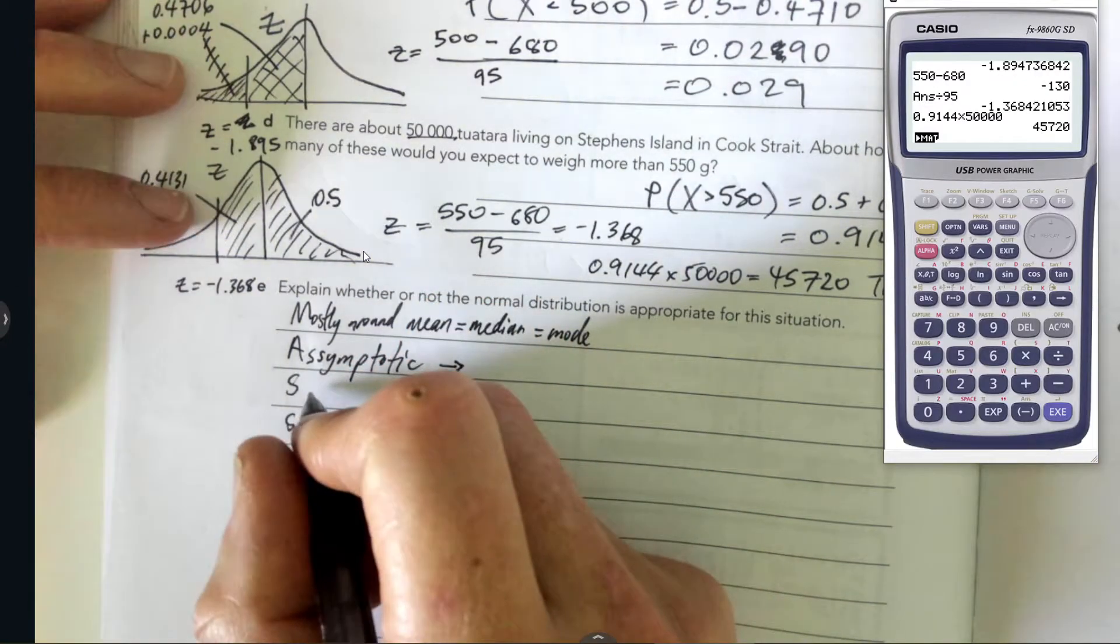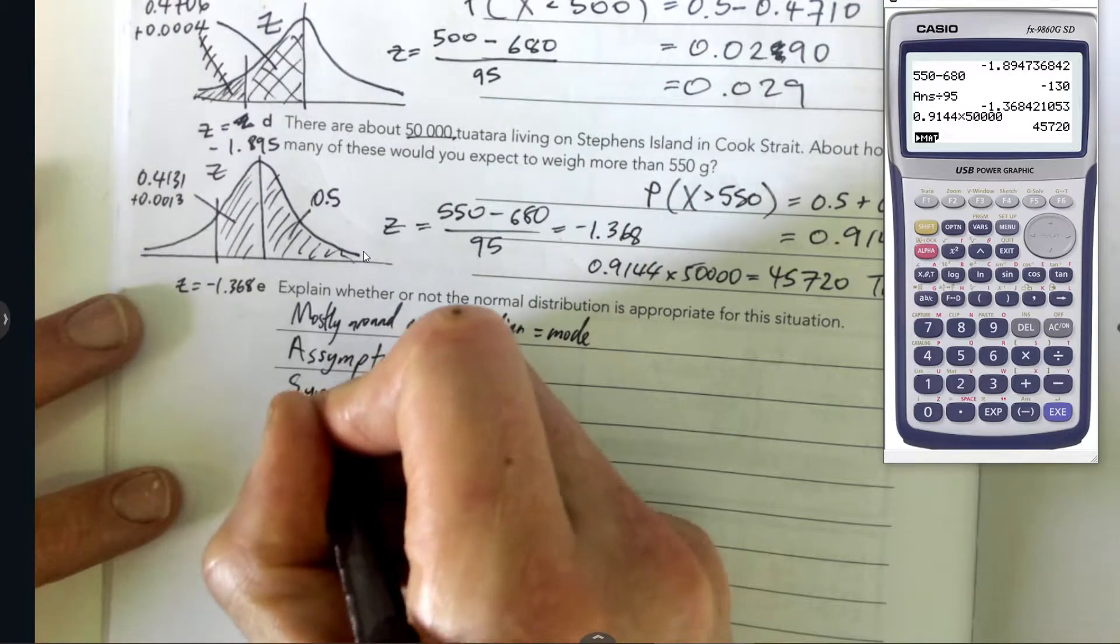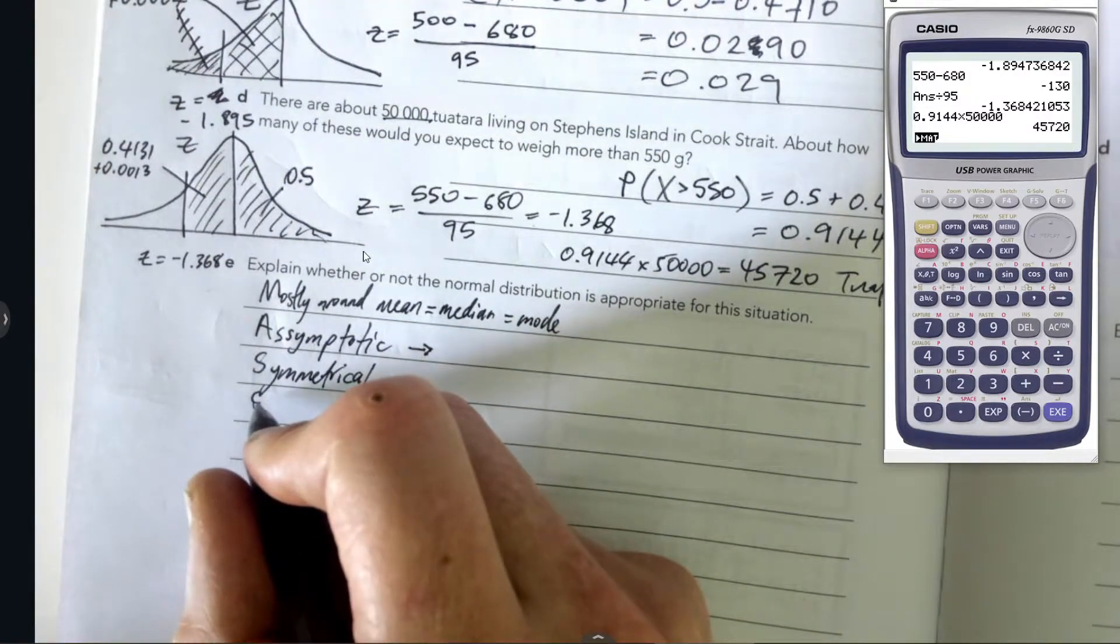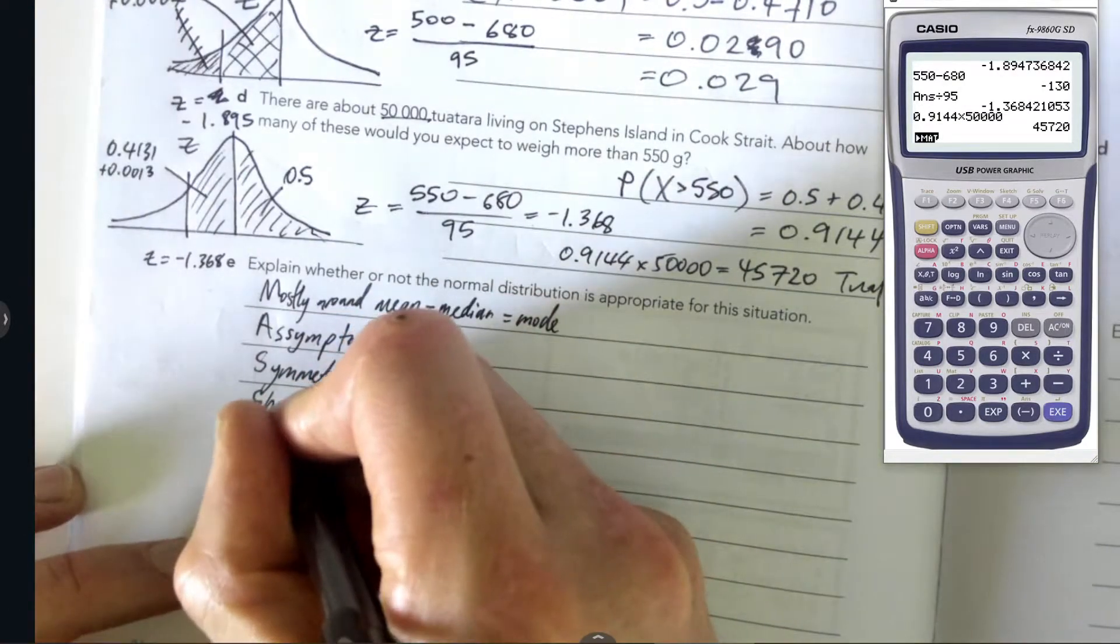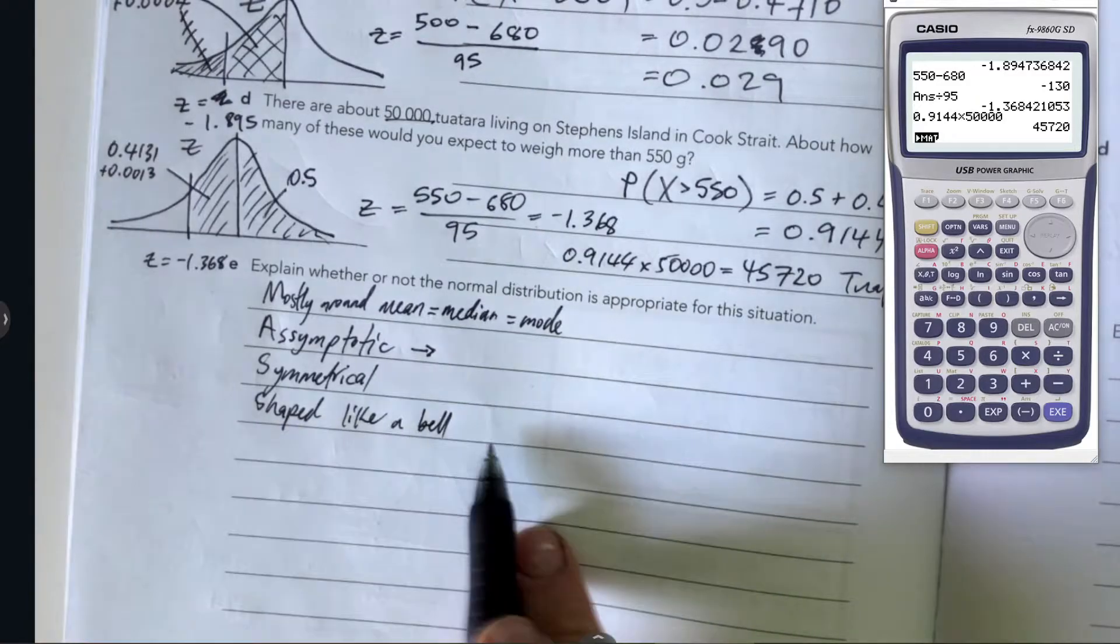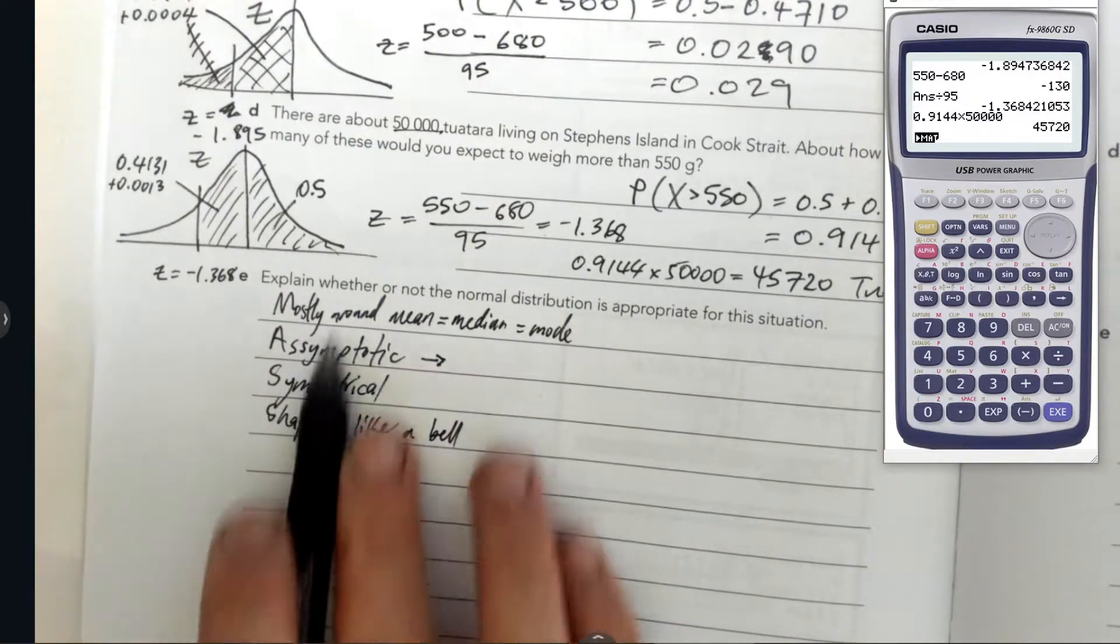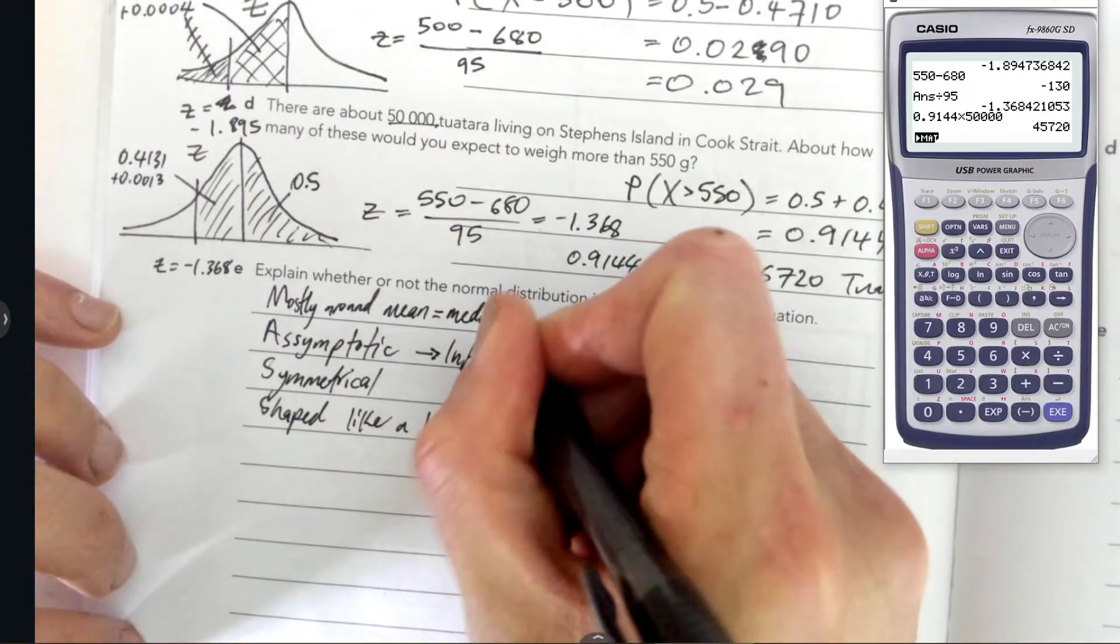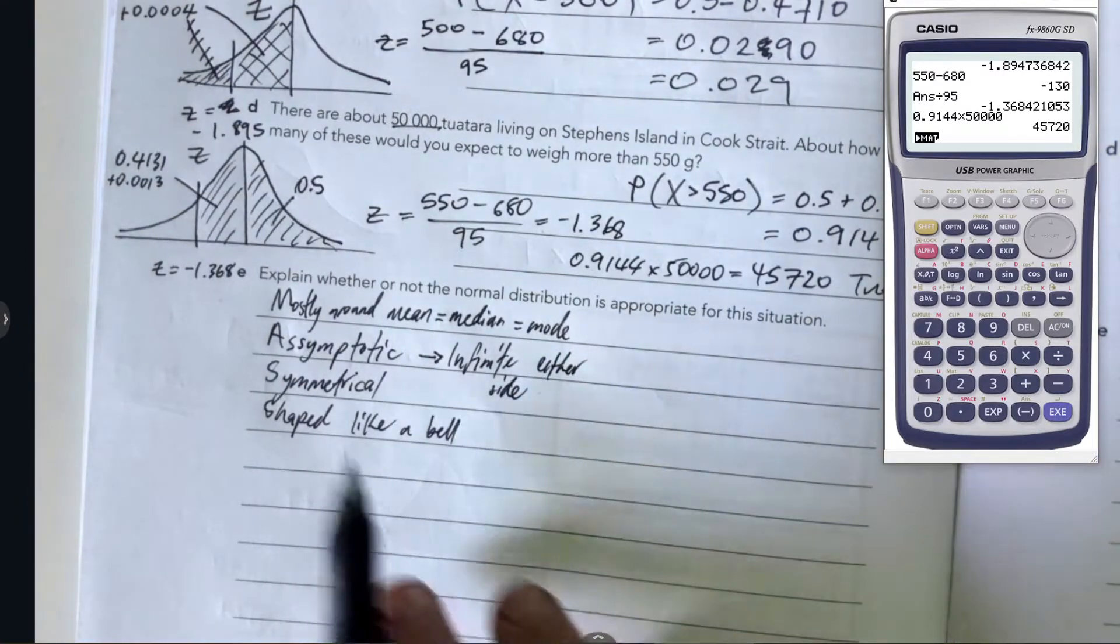Symmetrical should have two M's. Symmetrical and shaped like a bell. I think that assumption is not even really worth remembering, but it is useful anyway. I just write these down automatically, and then I go through them. I'm going to write infinite either side. That's sort of what asymptotic means.